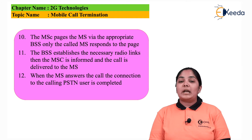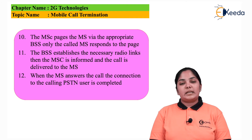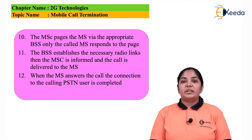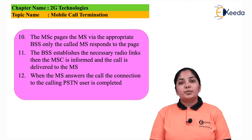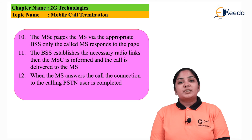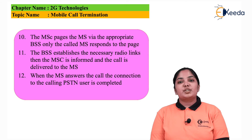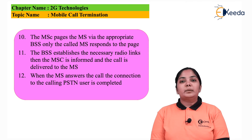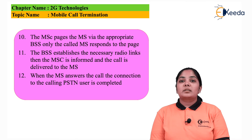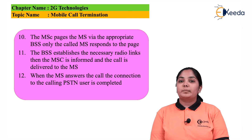Once the mobile station answers the call, on the twelfth step, the entire connection to the PSTN has been completed. This is how a call termination in the mobile phone system using the GSM system is carried out. The phone call is originated in the PSTN network and terminates in the GSM network.